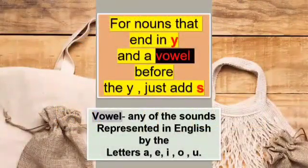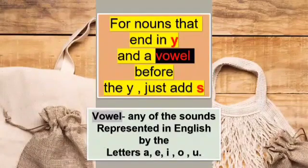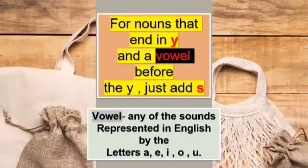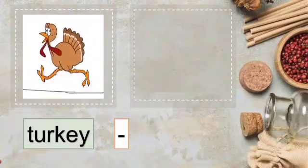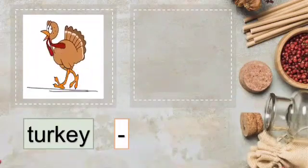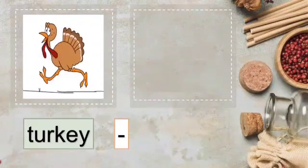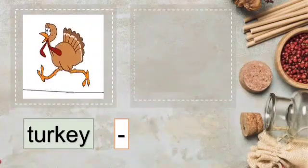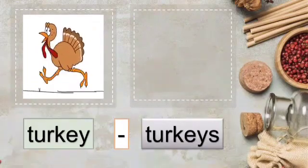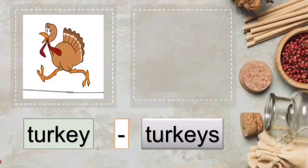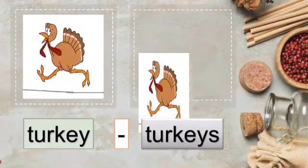Rule 3: nouns that end in Y and have a vowel before the Y — we add S to make them plural. As you know, vowels are A, E, I, O, U. For example, turkey — the spelling ends with Y and before the Y is E, which is a vowel. So when we change turkey into a plural, we just add S at the end. One turkey, two turkeys.